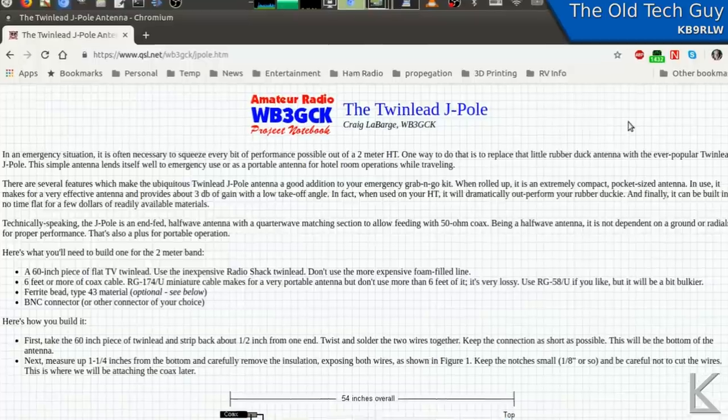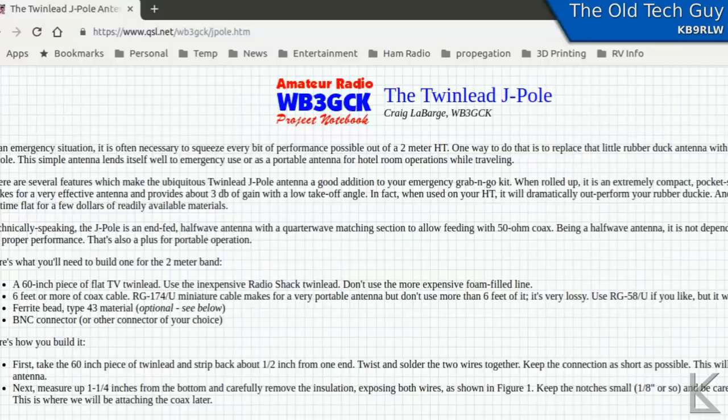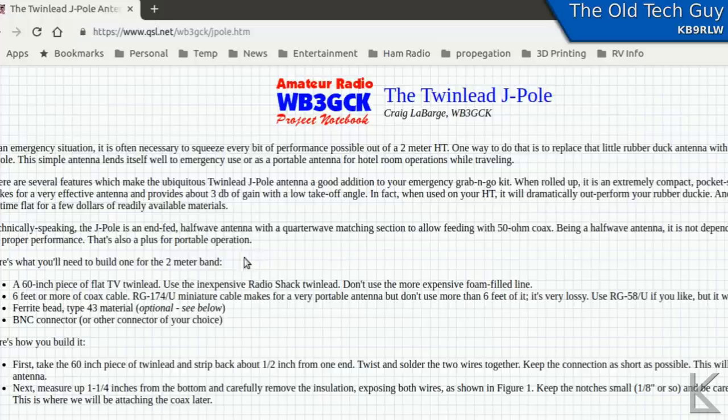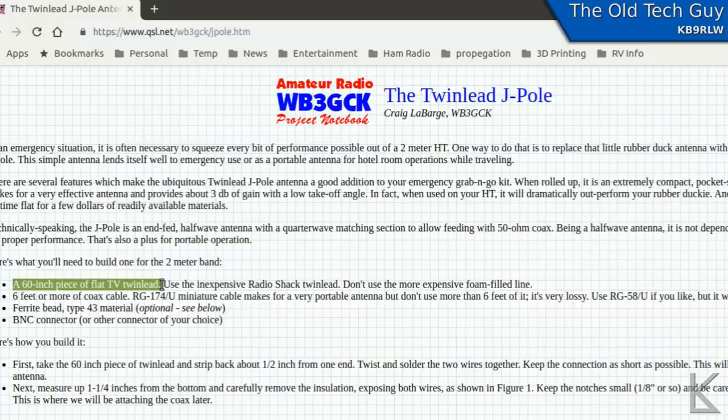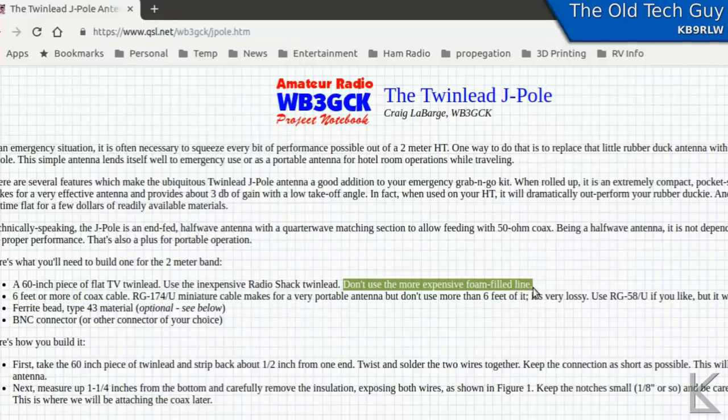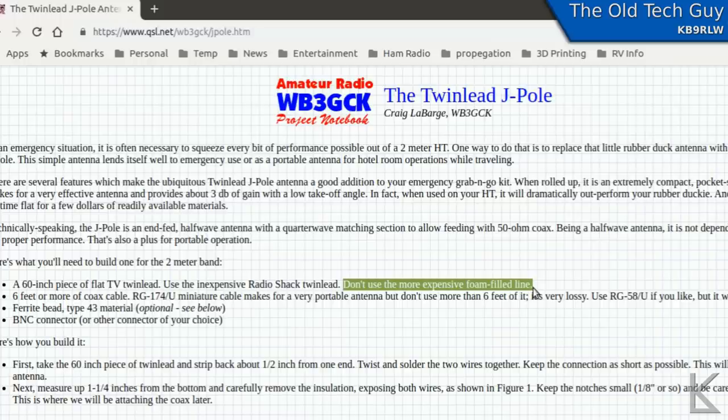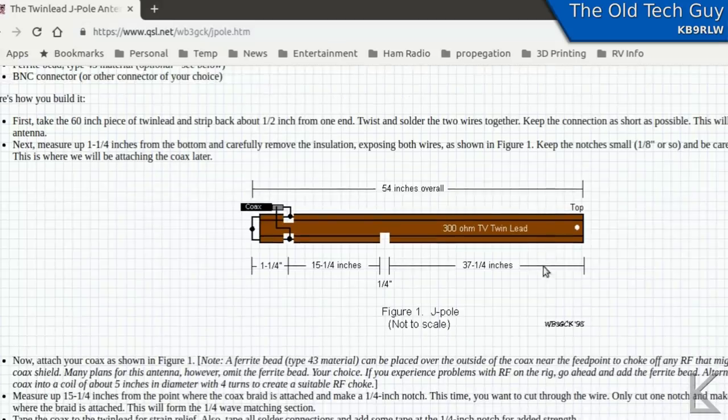So here we are on qsl.net on WB3GCK's page and his article on the twin lead J-pole. There are several sources for this design. It's a fairly common design. It's been in use for years. As I said, I built several of these several years ago. Really easy to put together. Extremely easy. And he gives you fairly nice instructions here on how to put it together. Under your supplies here, a 60 inch piece of flat TV twin lead. This stuff's a little harder to come by these days, but there's plenty of online sources for it. He bought them from Radio Shack. I used to get rolls of it there too, but there's other places to find it. Pretty cheap stuff. And he has a note here, don't use the more expensive foam filled line, probably because it's more expensive and more difficult to work with.